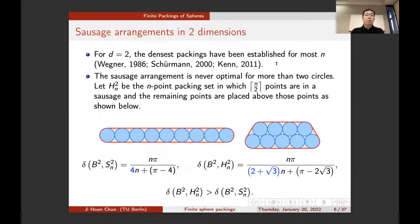So how does the sausage compare in terms of density? For d equals 2, when we just have circles, the densest packing has been established for most n. In particular, the sausage arrangement is never optimal for more than two circles. To see this, you just take a sausage and then you cut it in half and place one half just on top of the other, as you can see in this diagram. Then this resulting two layer packing on the right is denser than the sausage.